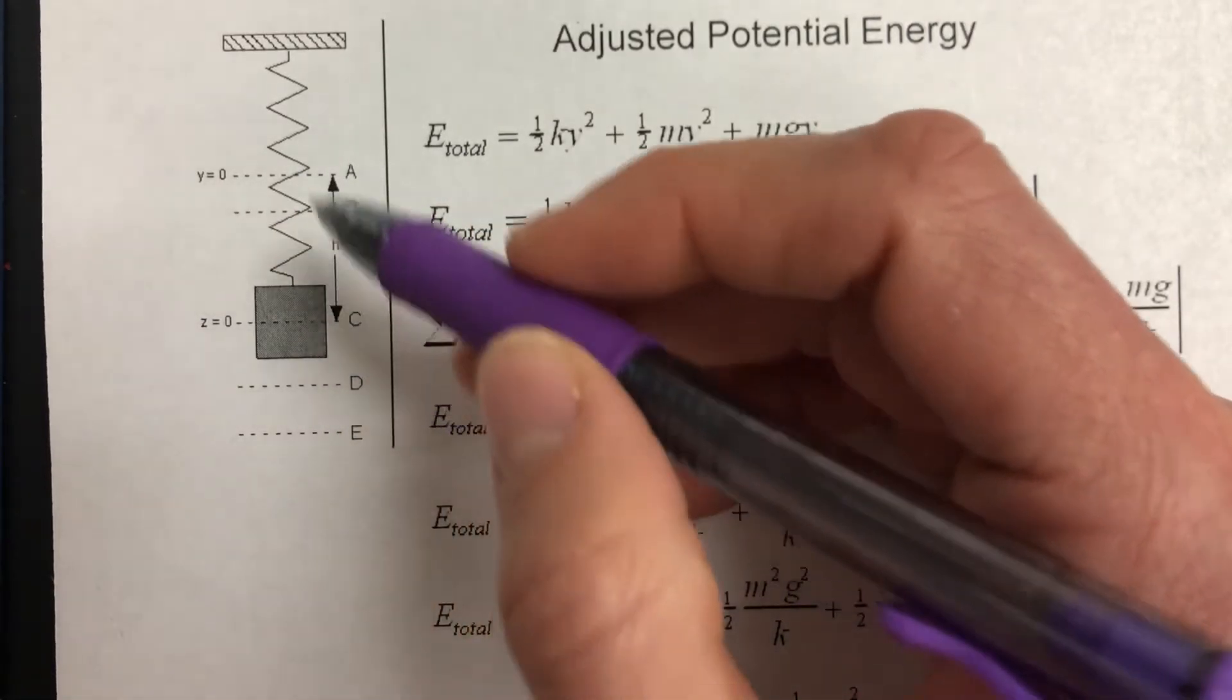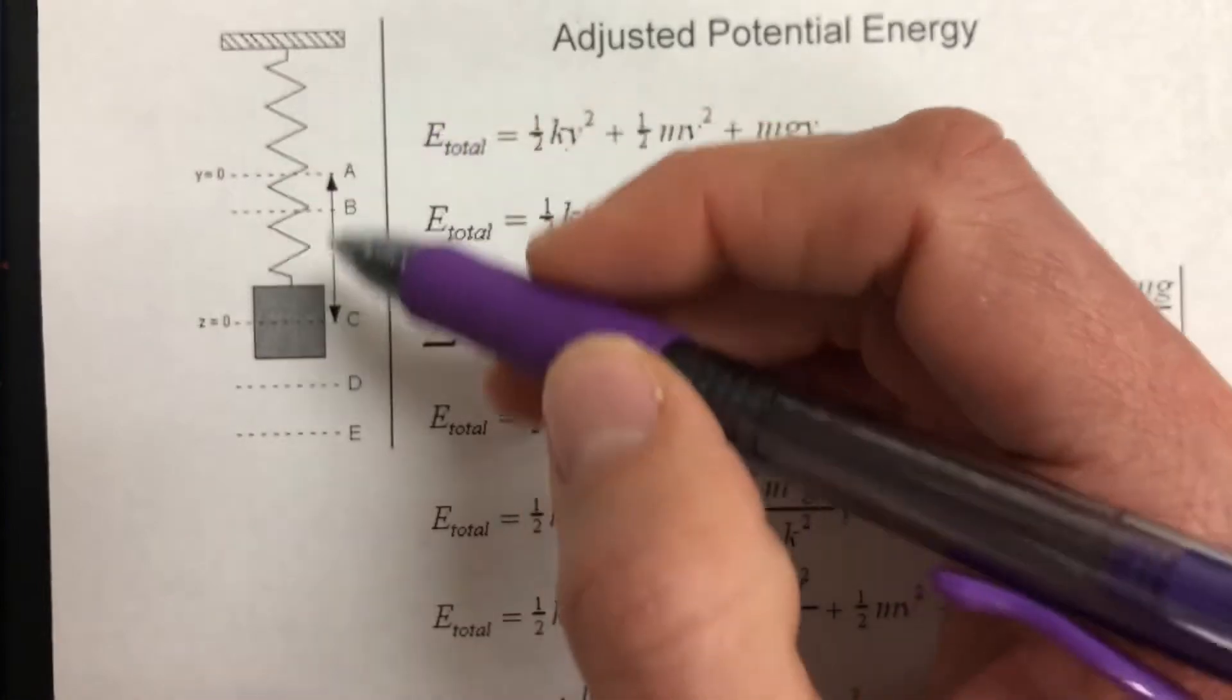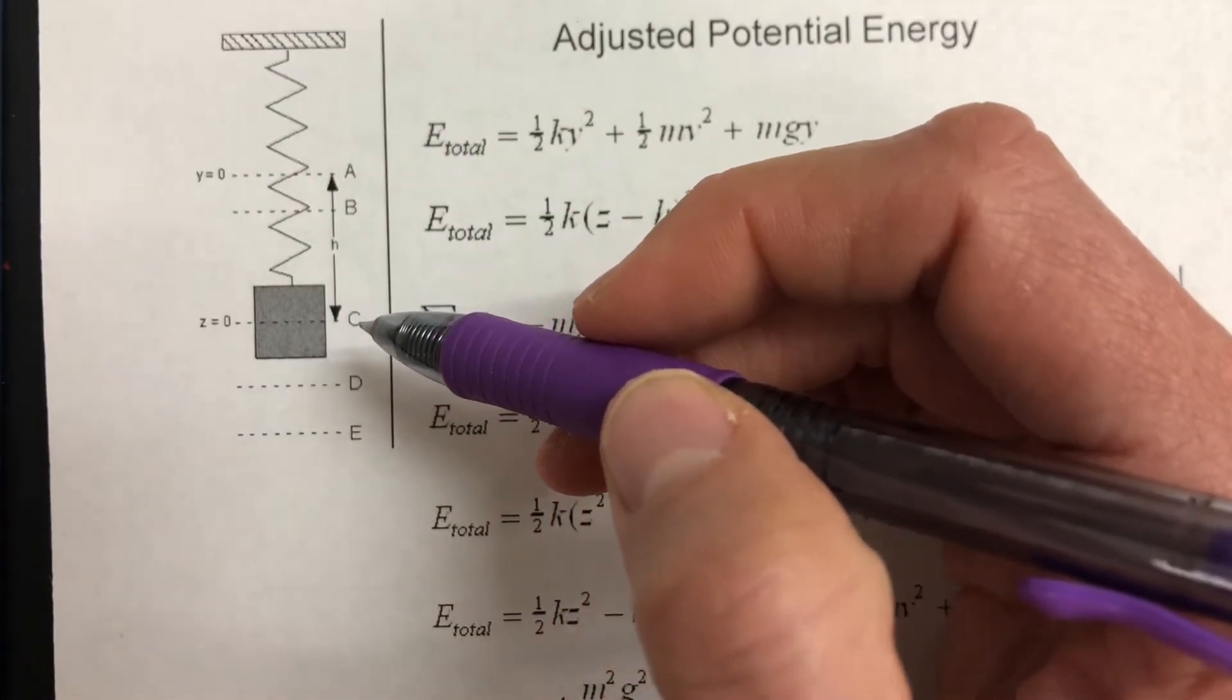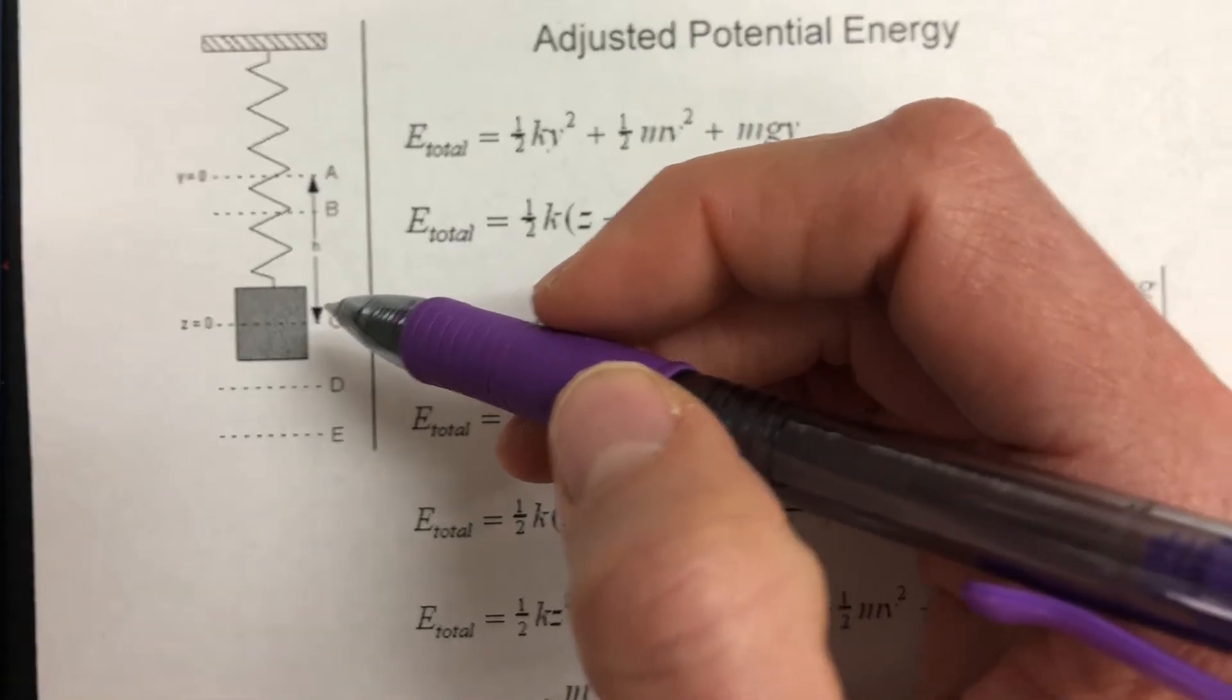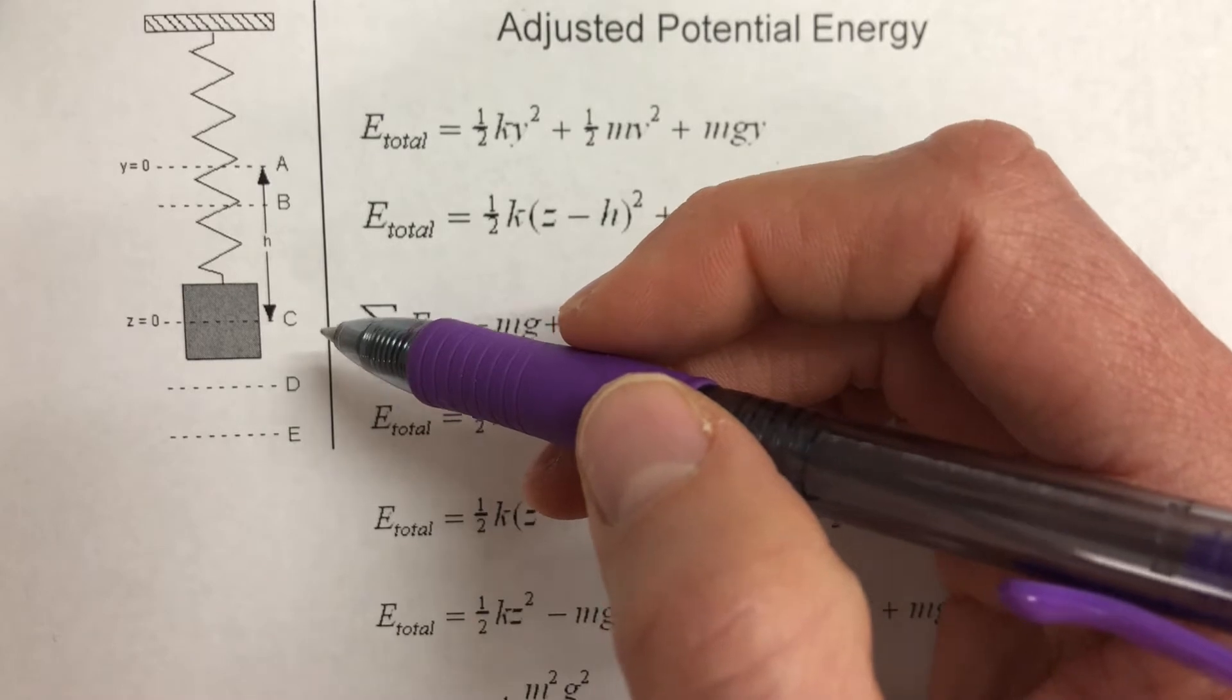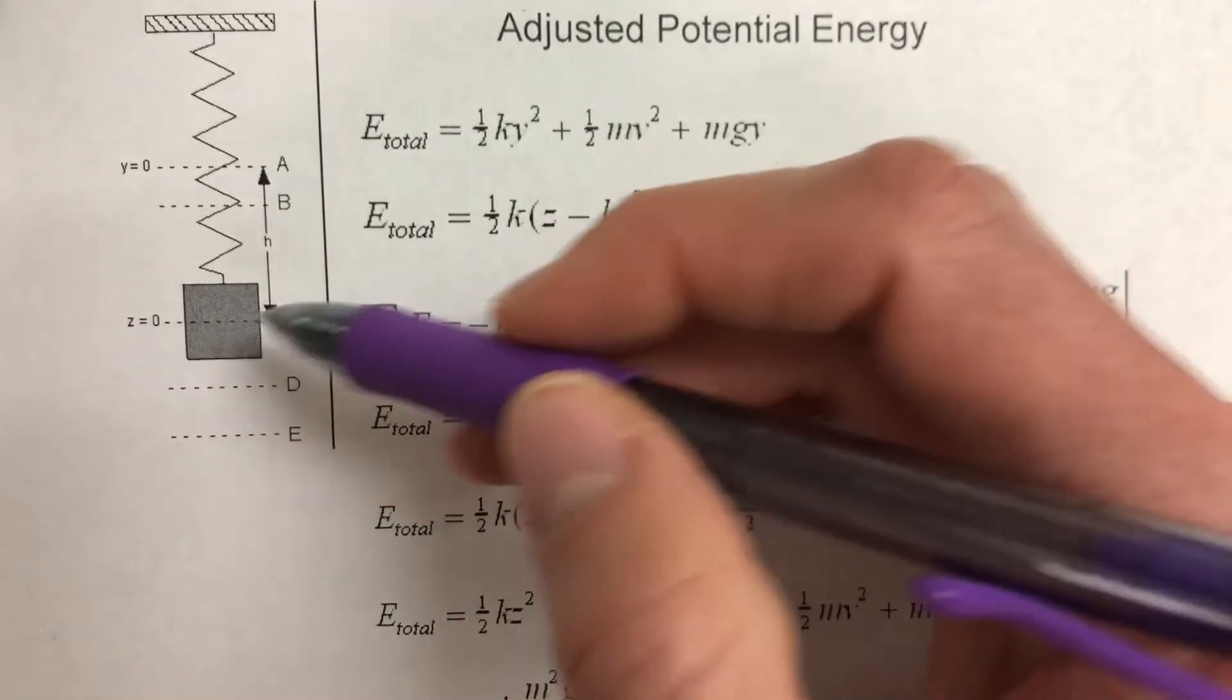Z equals zero is the equilibrium position of the spring when the mass is actually on the spring. So this is in the lab, the part of the lab that you just did. This is where you should have zeroed the force probe and the motion detector at this equilibrium position.